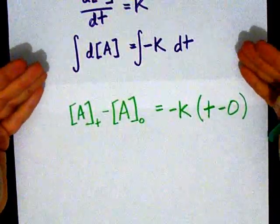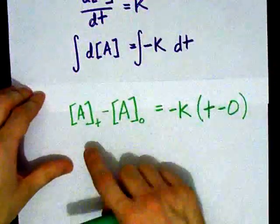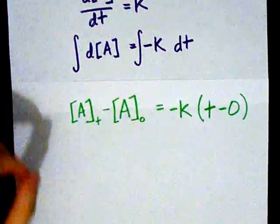But with a zero order reaction, this integral is simply a constant, and then over time, it's the concentration at any time t minus the initial concentration.